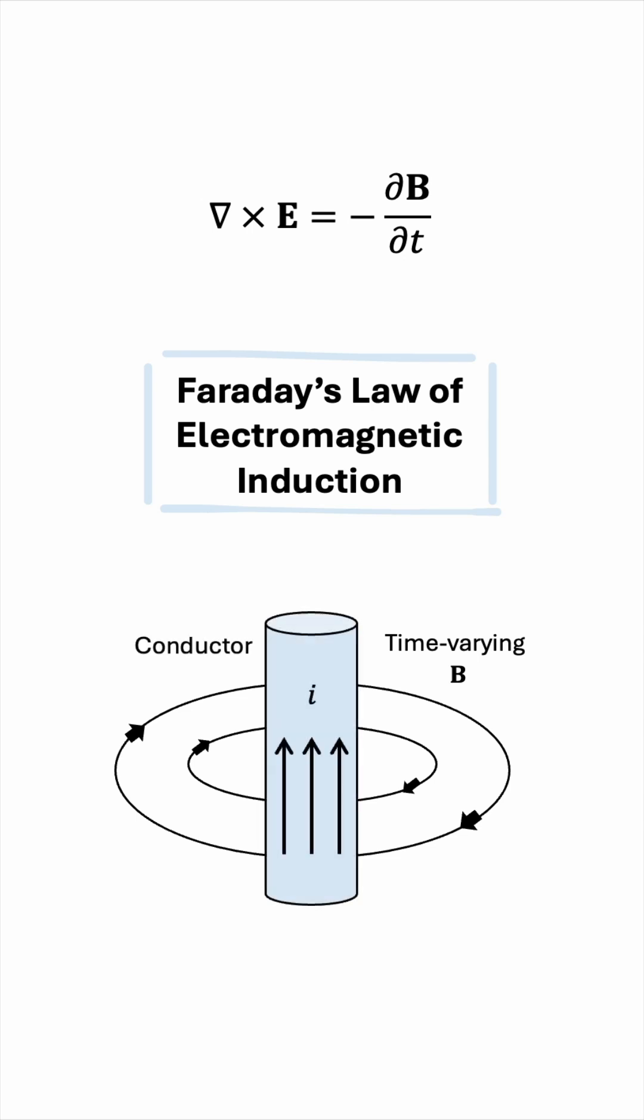Faraday's law of electromagnetic induction says that a changing magnetic field produces an electric field. So if there was a conductor lying around, then this produced electric field will drive current flow.